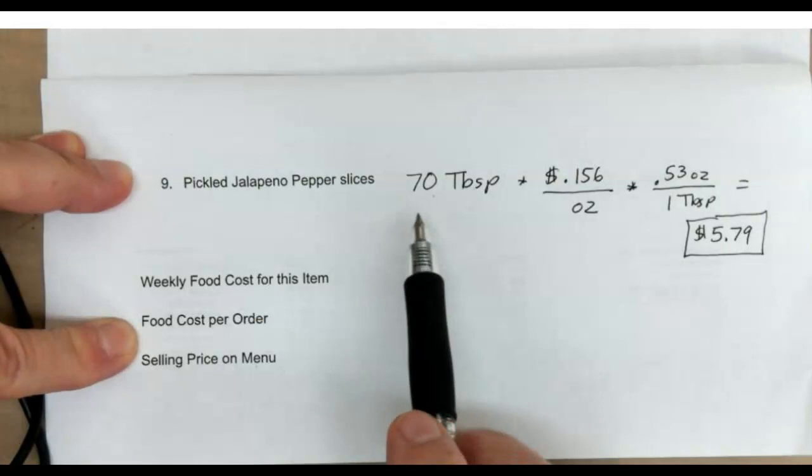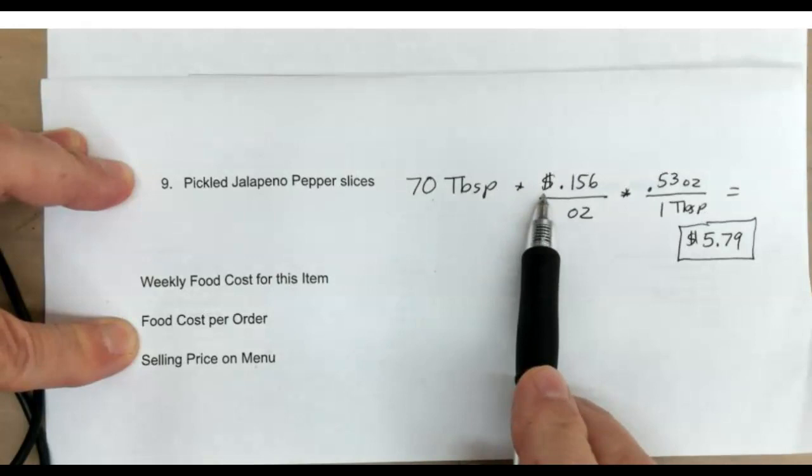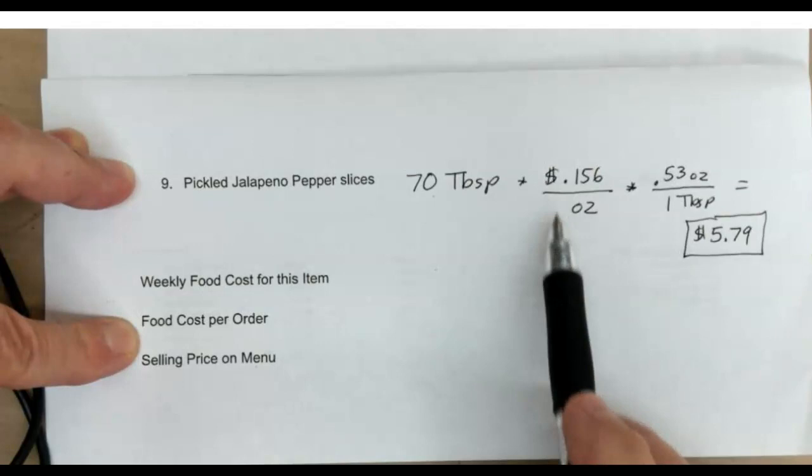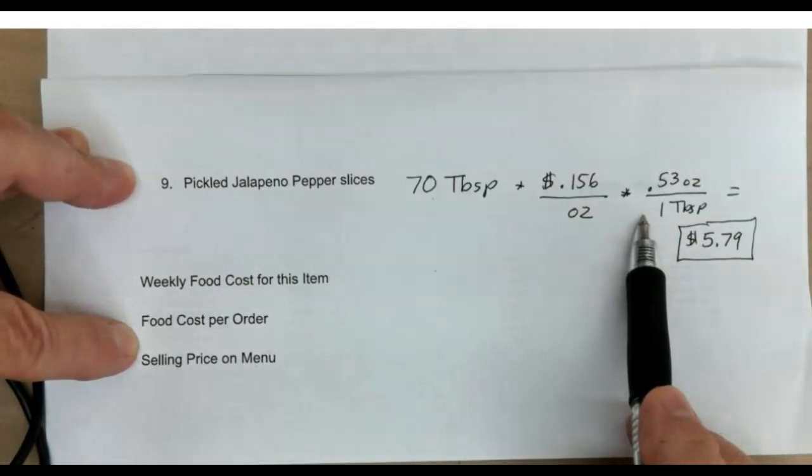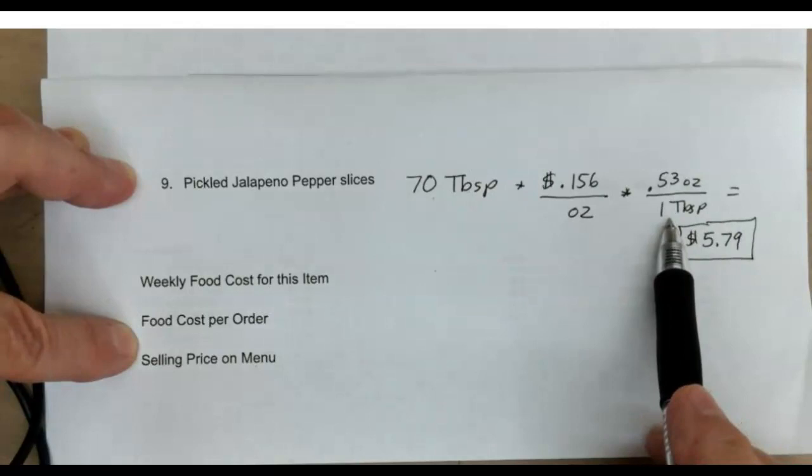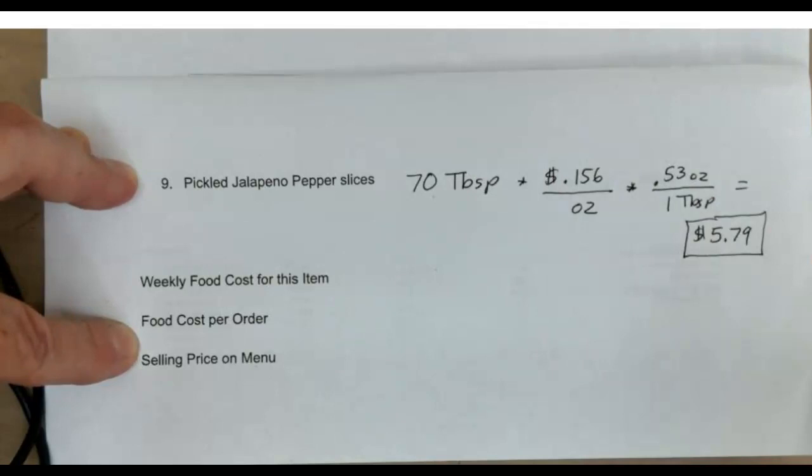$5.79. Just to review it, we had 70 tablespoons that we were required to have, and a grocery price of $0.156 per ounce. Then we had to look up how many ounces per tablespoon. I googled it, and for one tablespoon of pickled jalapeno pepper slices, you would have 0.53 ounces.